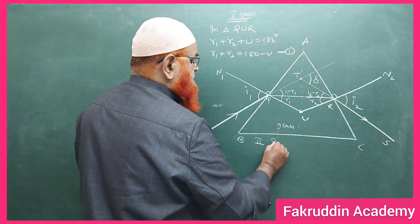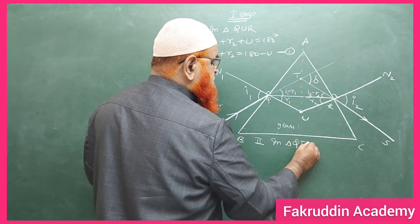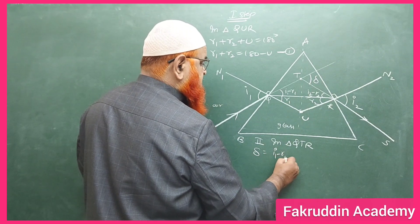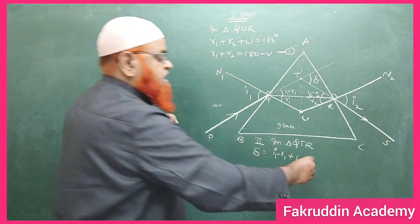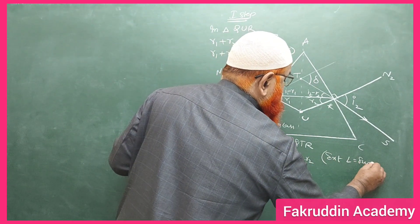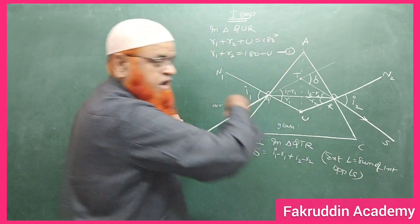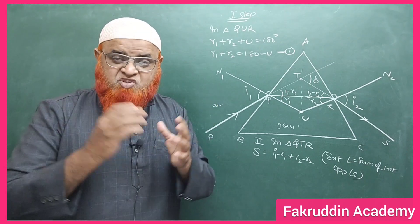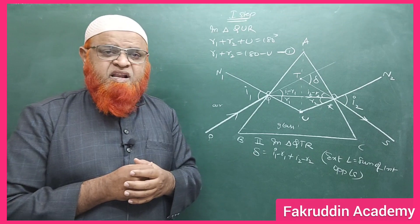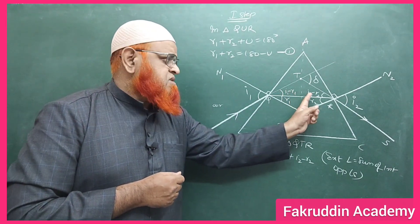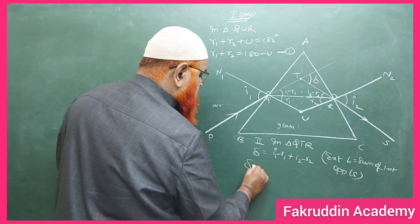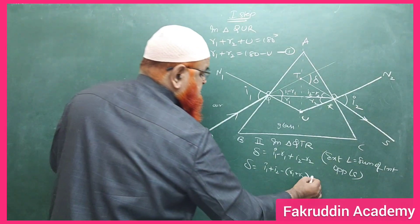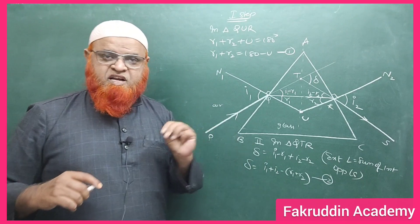The second formula comes from triangle QTR. Here, the exterior angle delta equals the sum of the interior opposite angles, which gives delta equals (i1 minus r1) plus (i2 minus r2). By the geometry property that the exterior angle equals the sum of interior opposite angles, we write delta equals i1 plus i2 minus (r1 plus r2). This is the second formula.